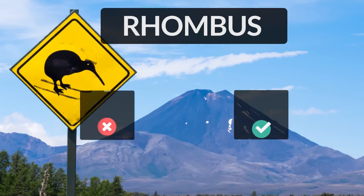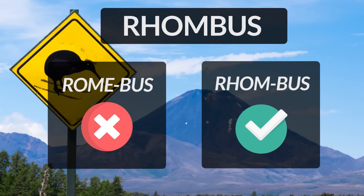Rhombus is a flat shape with four sides of equal length and four angles that usually are not 90 degrees. It is often incorrectly pronounced as rhombus. Please remember, R-H-O-M is not pronounced as 'rom' but 'rom'. So the correct pronunciation of the word is rhombus.